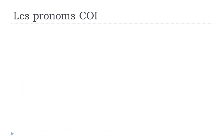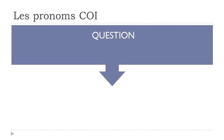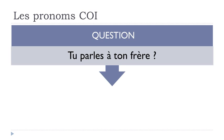Les pronoms complément d'objet direct. We'll start with une question, a question. It's a basic question. You get: tu parles à ton frère. Parler is to talk. Tu parles — you talk to your brother, à ton frère.